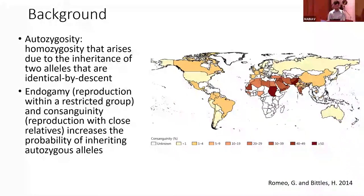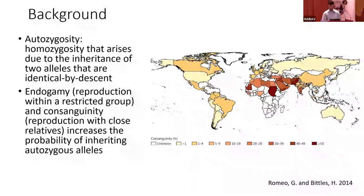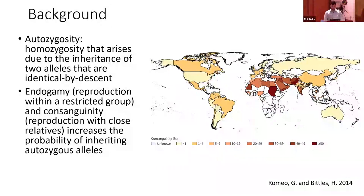Autozygosity is defined as homozygosity in the genome that arises due to alleles that are inherited identical by descent — alleles inherited from both parents that each inherited from the same common ancestors. There are two reproductive practices that increase autozygosity: endogamy, which is reproduction within a restricted group such as Ashkenazi Jews, and consanguinity, which is reproduction with close relatives, typically between individuals that are second cousins or closer.